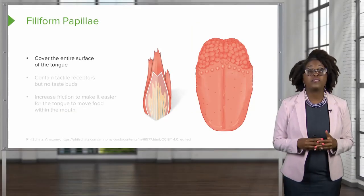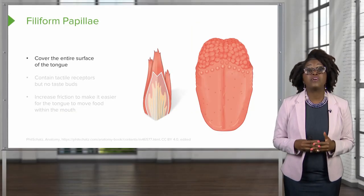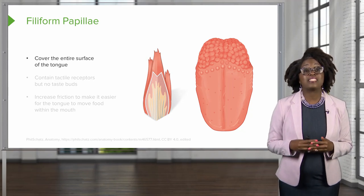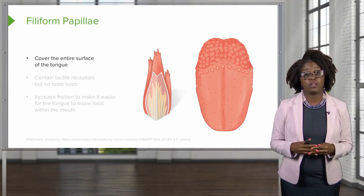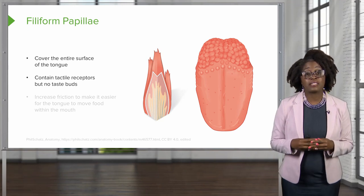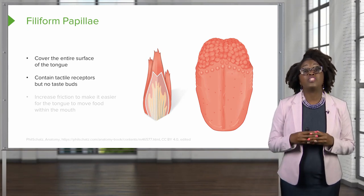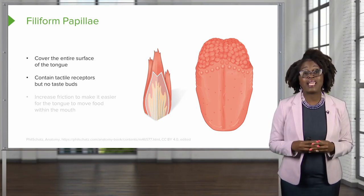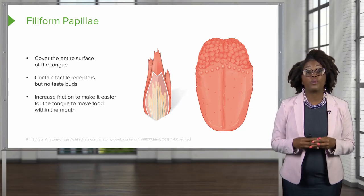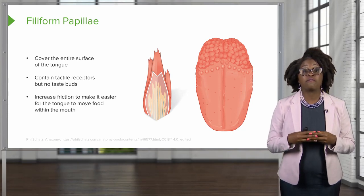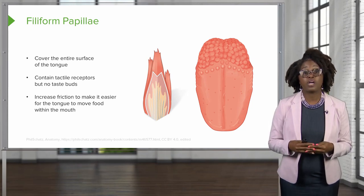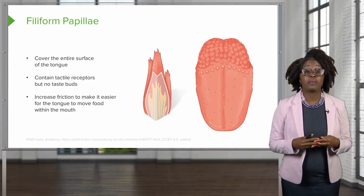A fourth type of papillae is the filiform papillae. This covers the entire surface of the tongue. These are tactile papillae that do not contain any taste buds. They are responsible for increasing friction, which makes it easier for the tongue to move food within the mouth.